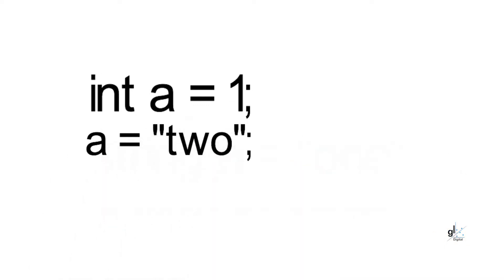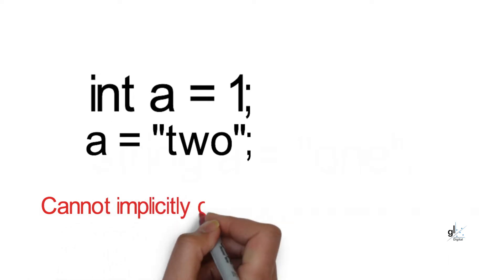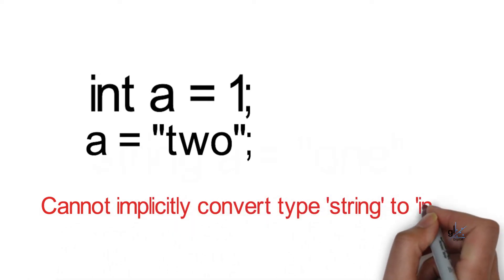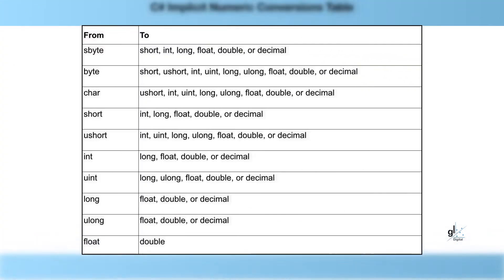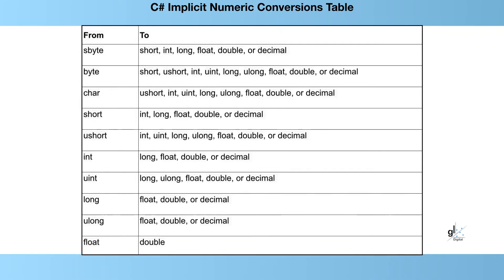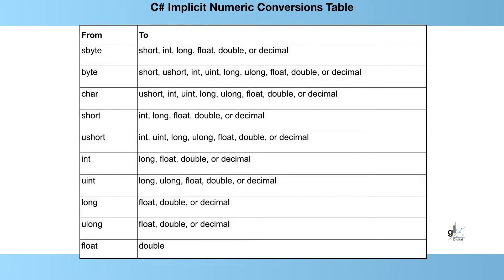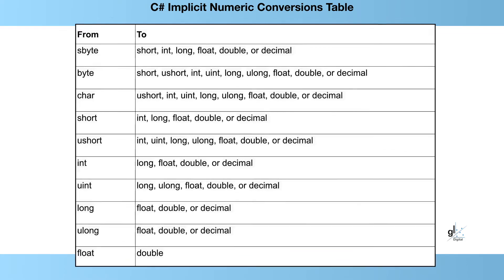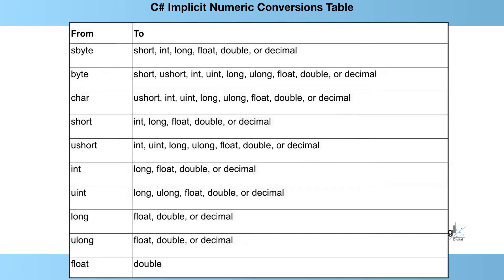This code would result in a compile time error stating: cannot implicitly convert type string to int. Variables defined as certain numeric data types can be implicitly converted to variables defined as other data types. This table — which can be downloaded from GitHub — contains details of predefined implicit numeric data type conversions in C#.